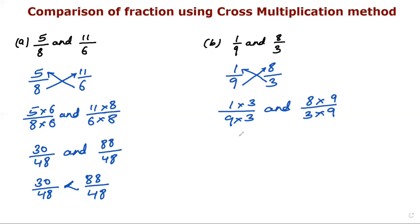What I will get here is 3/27, and on this side, 9 times 8 is 72, so 72/27. Here we have converted them into like fractions, and we can compare them easily.